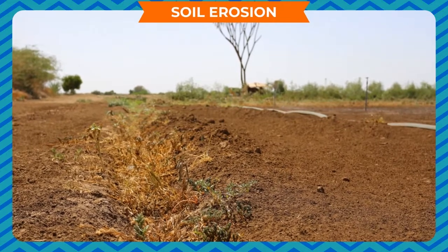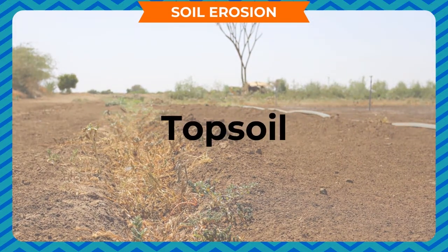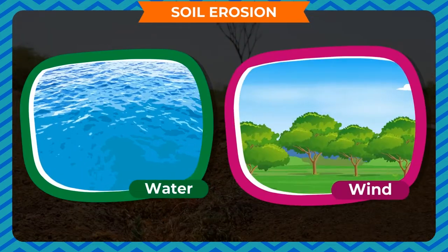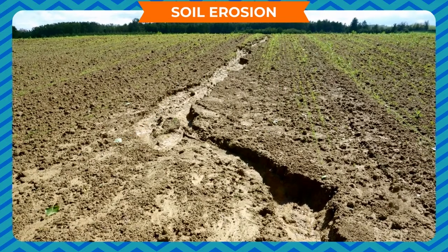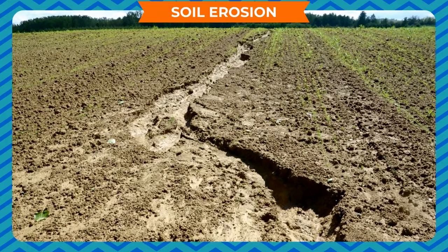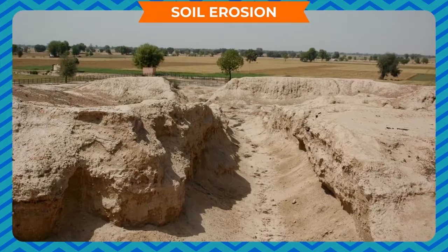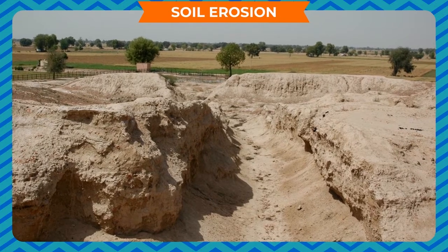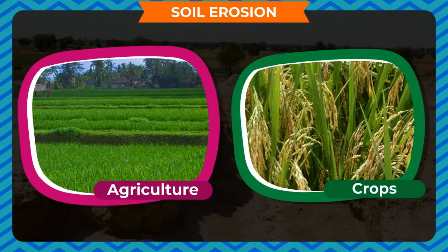The removal of topsoil takes place by the action of water and wind. This removal of topsoil from the earth's surface is called soil erosion. Erosion erodes the top fertile layer of the earth, which affects agriculture and crops. Three main factors leading to soil erosion are: erosion by water, erosion by wind, and erosion by human activities.